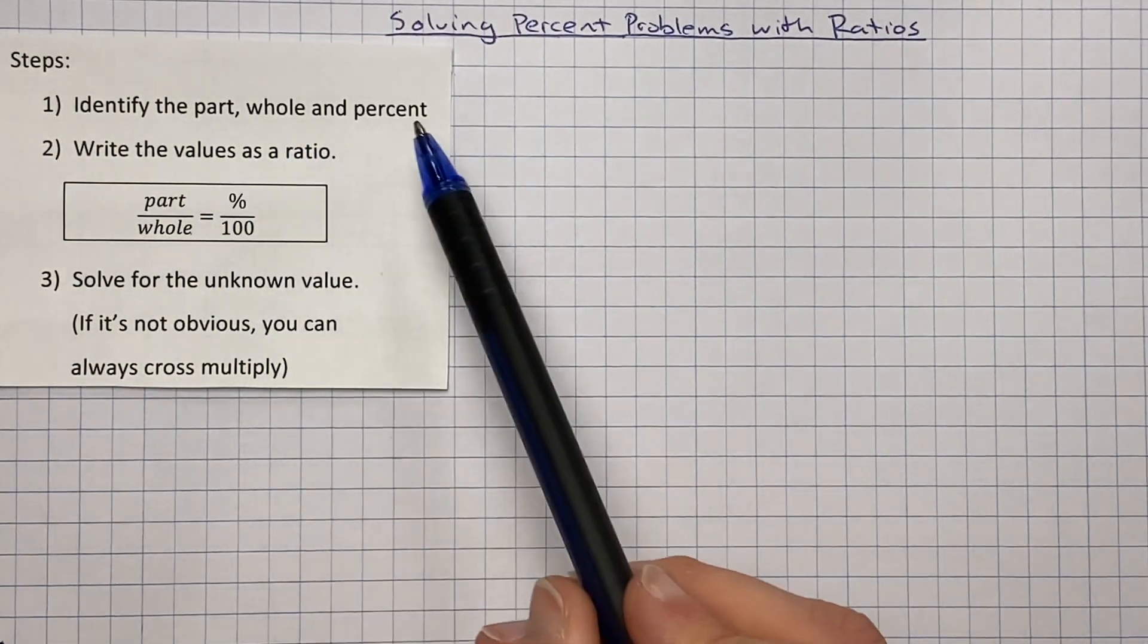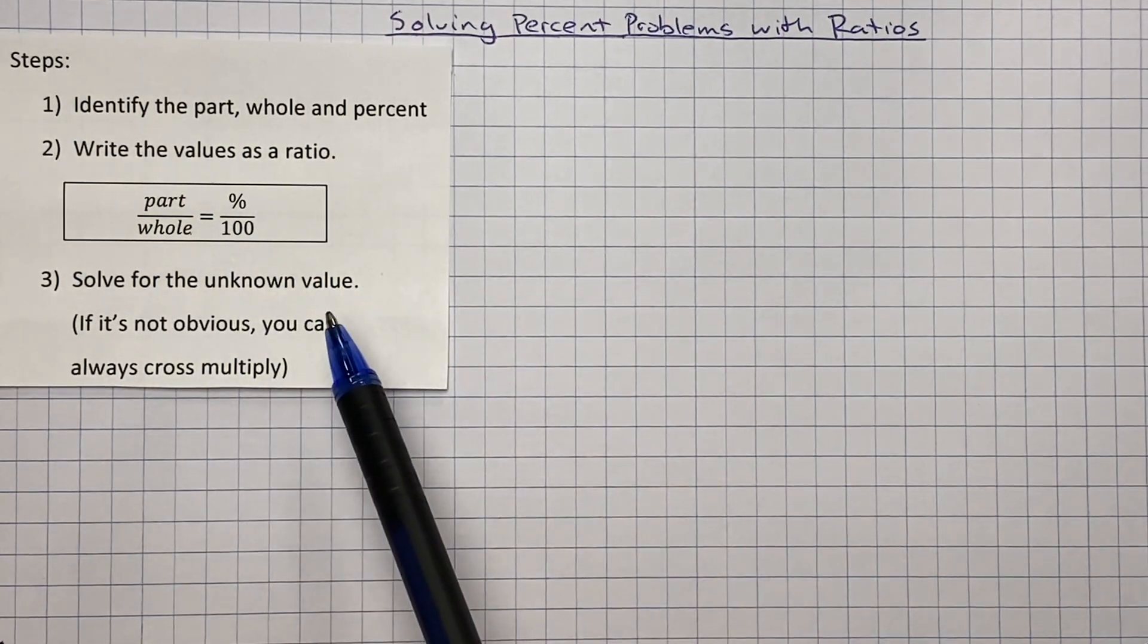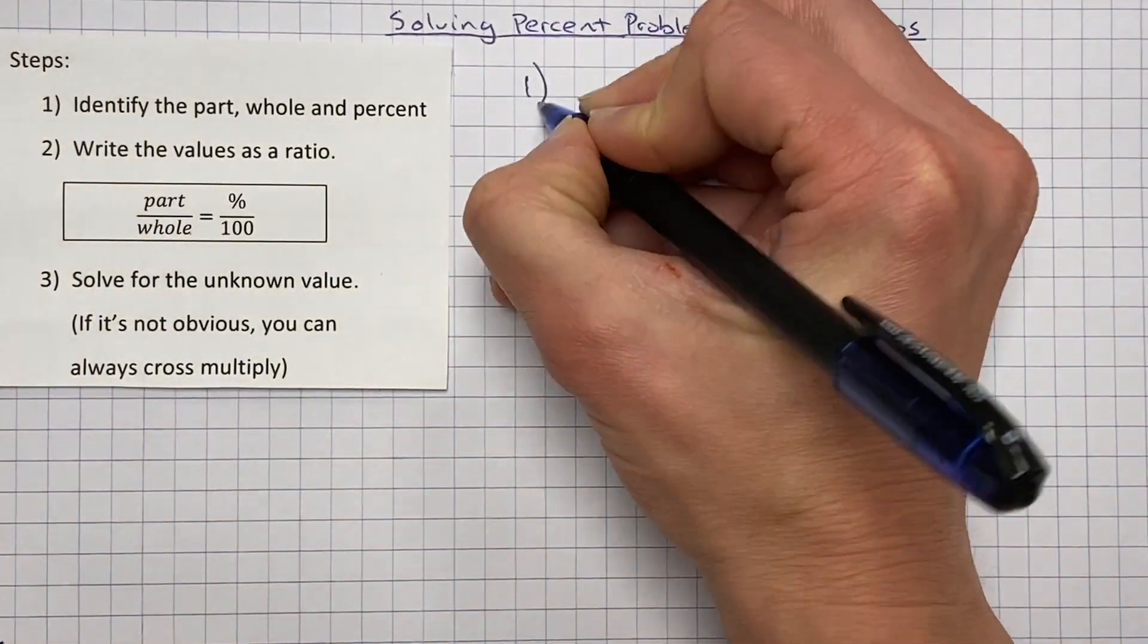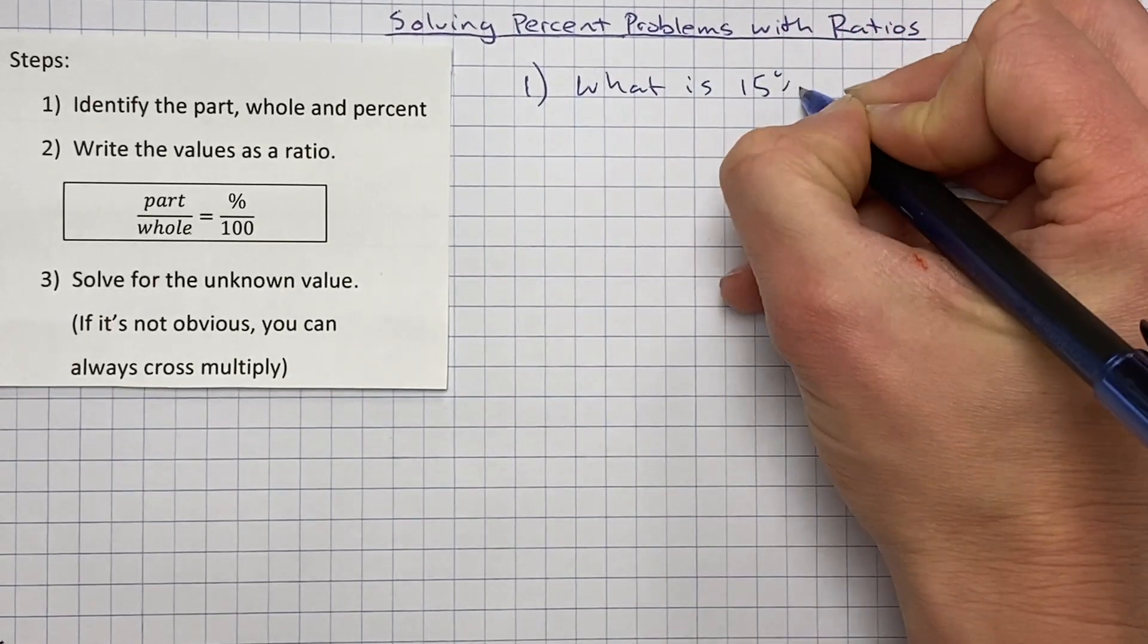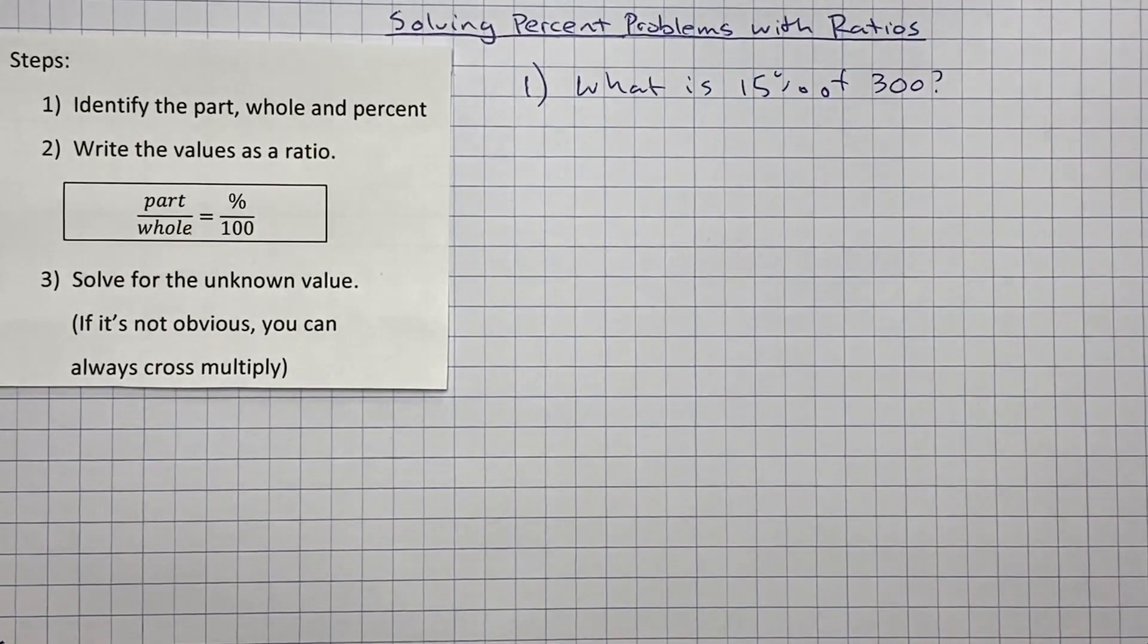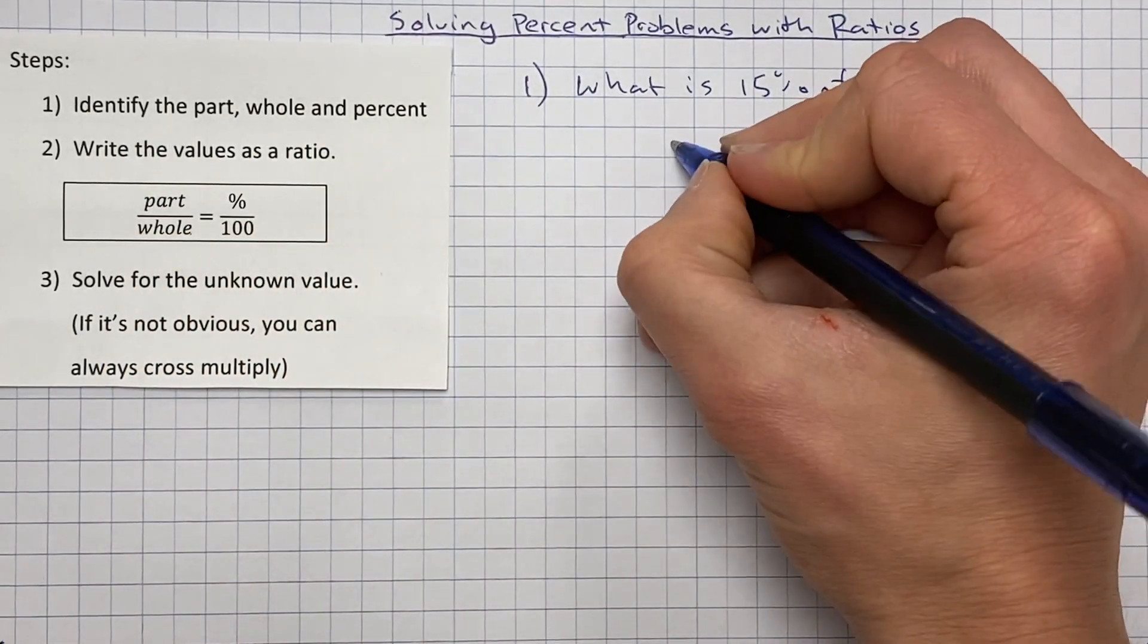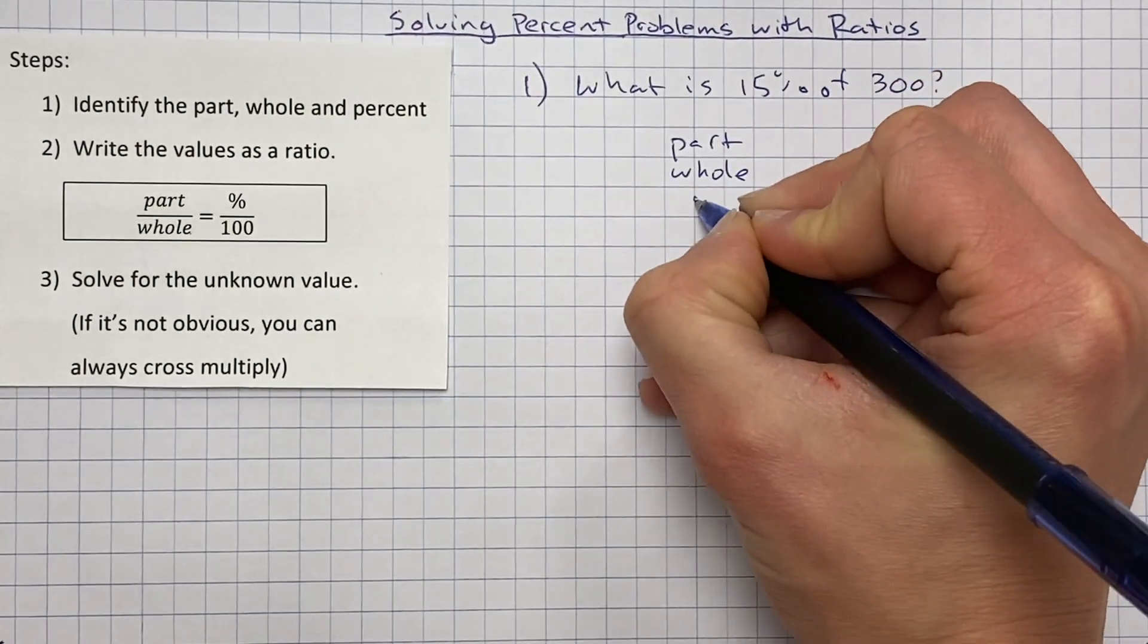We'll do this by identifying the part, the whole, and the percent, writing those values as that ratio, solving for the unknown value, and then we'll have our answers. So let's look at an example problem right here. So let's say you had the problem, what is 15% of 300? So that's the question you're being asked. We're going to look at that, identify the part, the whole, and the percent. So I'm going to write part, whole, and then percent.